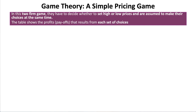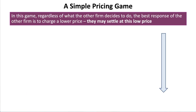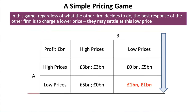Here we have a simple pricing game. In this two-firm game, they have to decide whether to set a high or a low price and are assumed to make their choices at the same time. The table shows the profits — in other words the payoffs — that result from each set of choices. To understand the game, we're going to isolate one firm and assume that firm B makes the first decision, with each firm motivated by profit maximisation. Regardless of what the other firm decides to do, the best response is to charge a lower price. There's a risk that charging a high price when the other charges low means the return is nothing, so they may settle at the low price where the payoff for both firms is one billion pounds each.